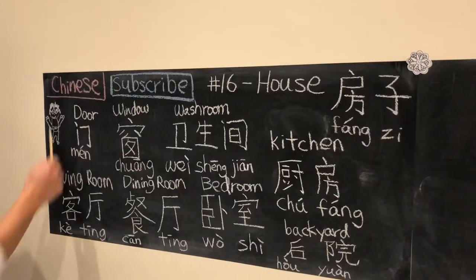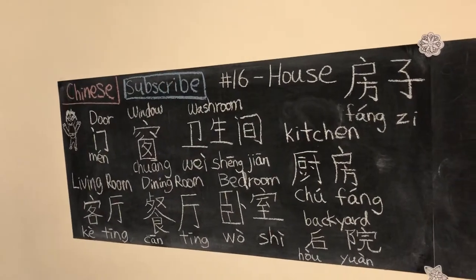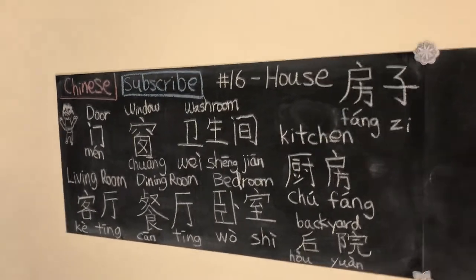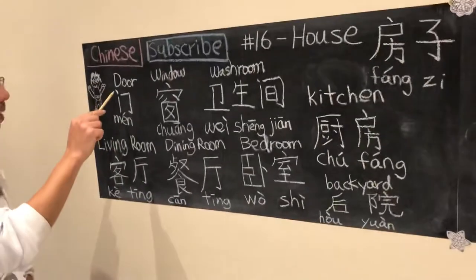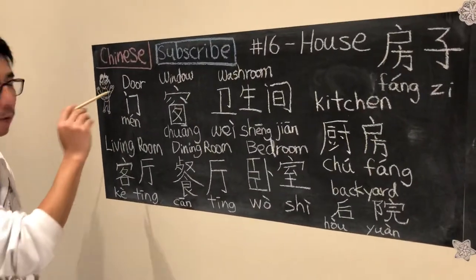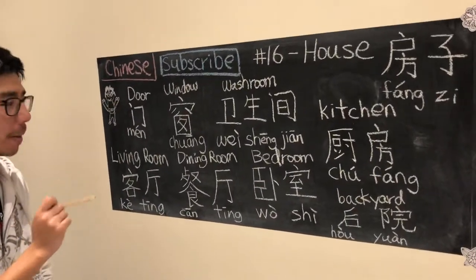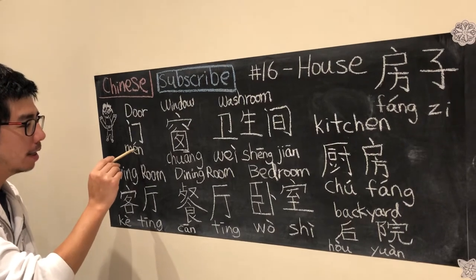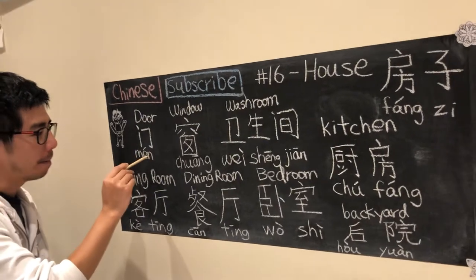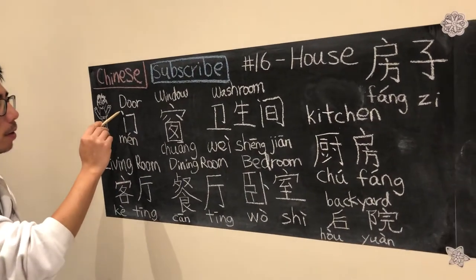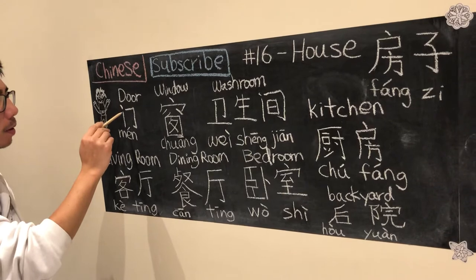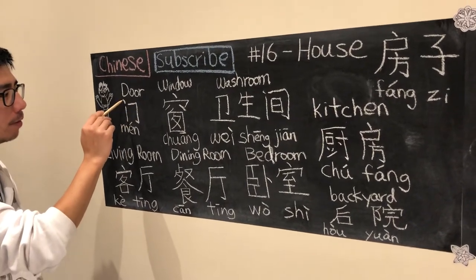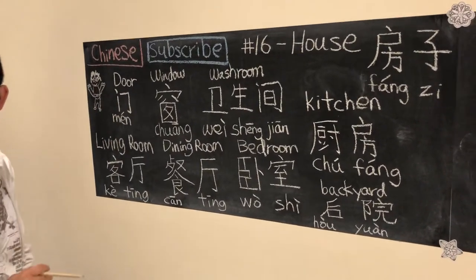The first part of the house is the door — that's the part you first walk in. This is the door, which is called 门. It looks like a door, except it has a little bit of a dot.